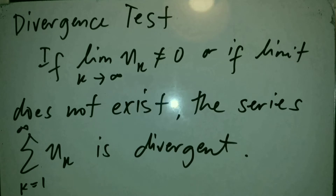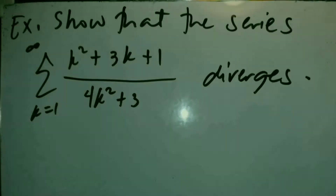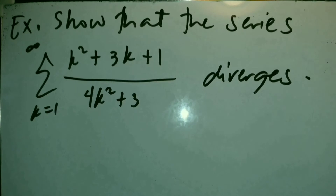For the divergence test: if the limit of u_k as k approaches infinity is not equal to zero, or if the limit does not exist, the series is divergent. Let us take this example — show that the series summation of (k² + 3k + 1) / (4k² + 3) where k goes from 1 to infinity diverges. To show the series is divergent, we will use the divergence test.